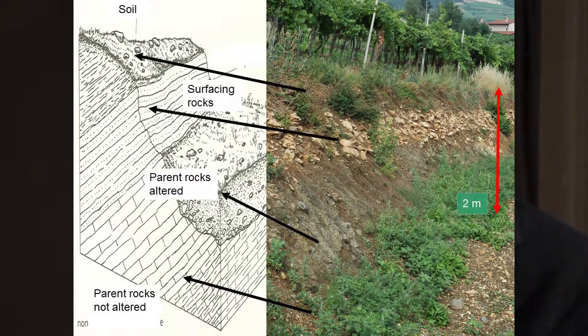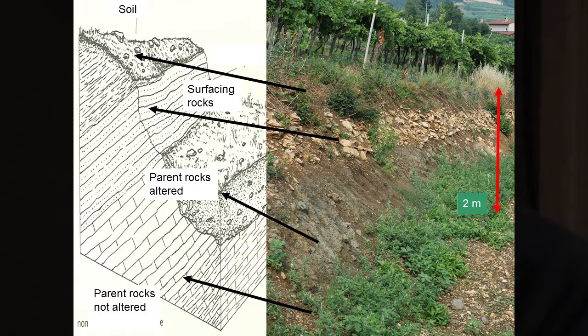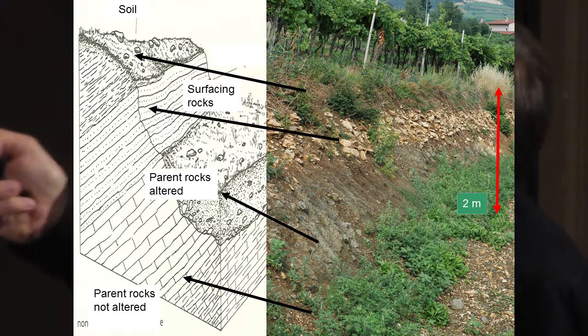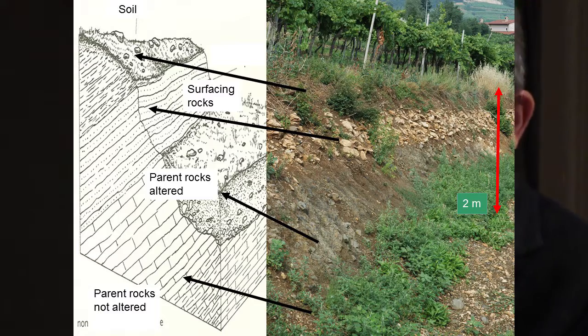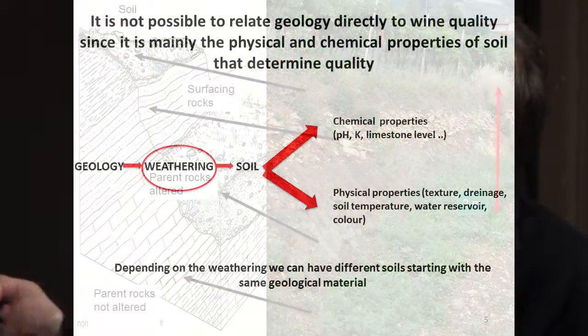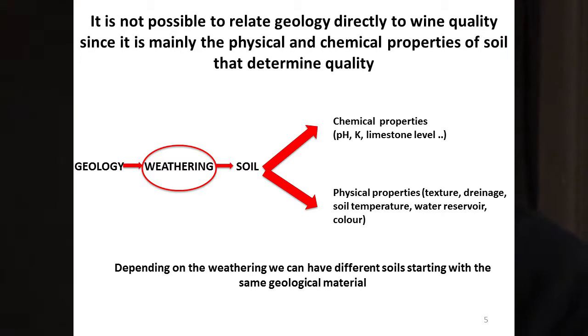When we speak about the vineyard, we know that the roots of the vine are not in the unaltered parent rocks — the roots are in soil or surfacing rocks, or even sometimes in parent rocks, but not in unaltered parent rocks. Usually, the vine doesn't take water or minerals from the parent rocks. In these cases you can see we have two meters from the soil to the unaltered parent rocks, and sometimes the roots don't reach that deep. So it's clear that it's not possible to relate geology directly to wine quality, since it's mainly the physical and chemical properties of soil that influence quality.